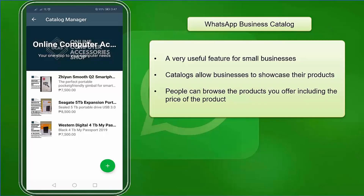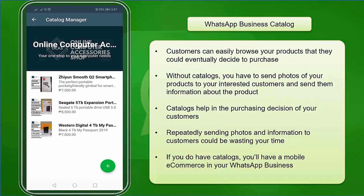A very useful feature for small businesses is the business catalog. Catalogs allow businesses to showcase their products so that people can browse what you offer, including the price. Without catalogs, you have to send photos of your products to interested customers along with the product information, which could be a waste of your time. If you do have catalogs, it's like having a mobile e-commerce feature in your WhatsApp Business profile.